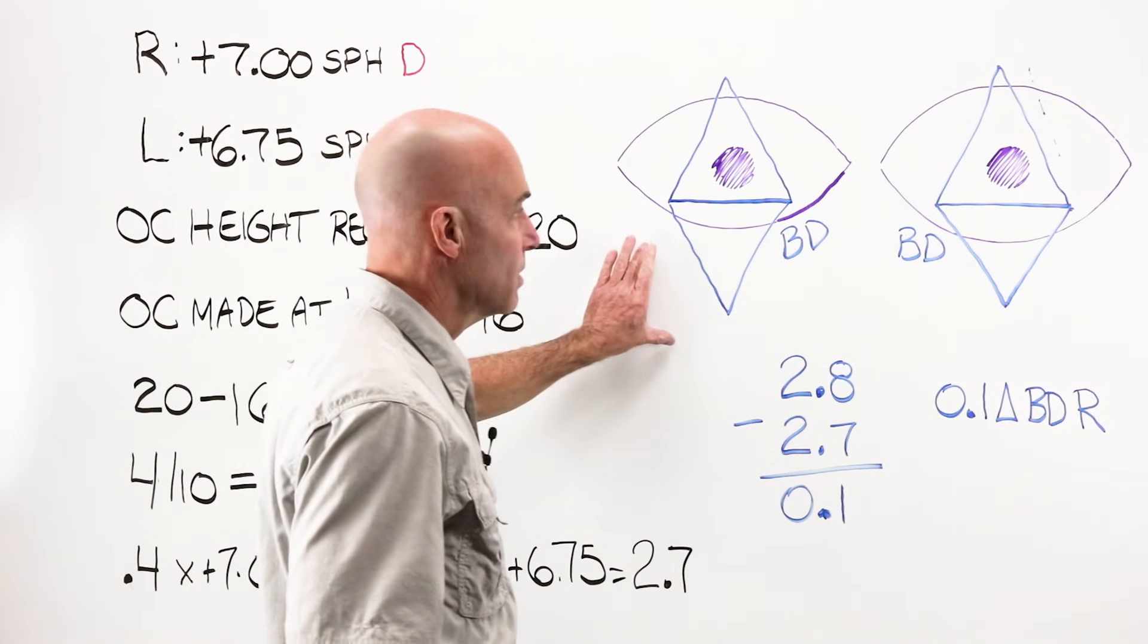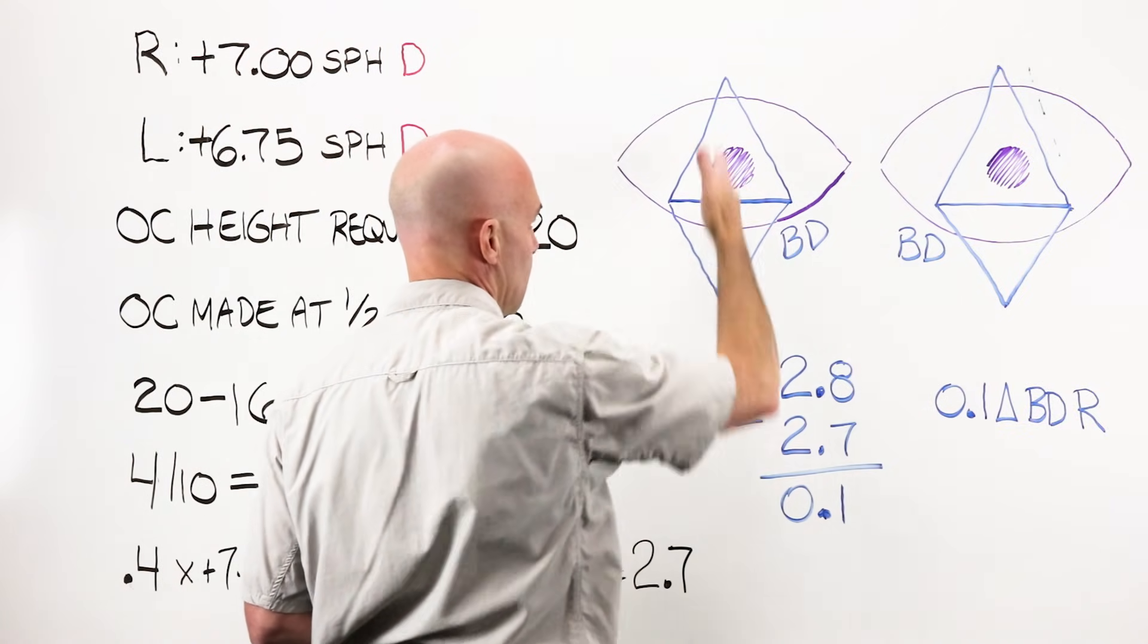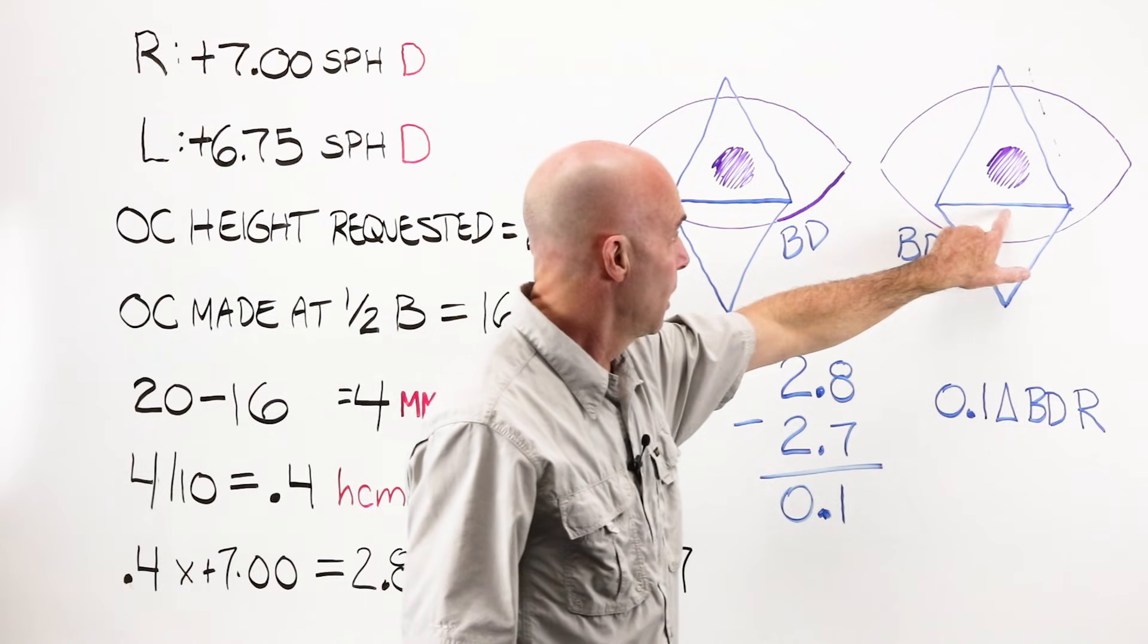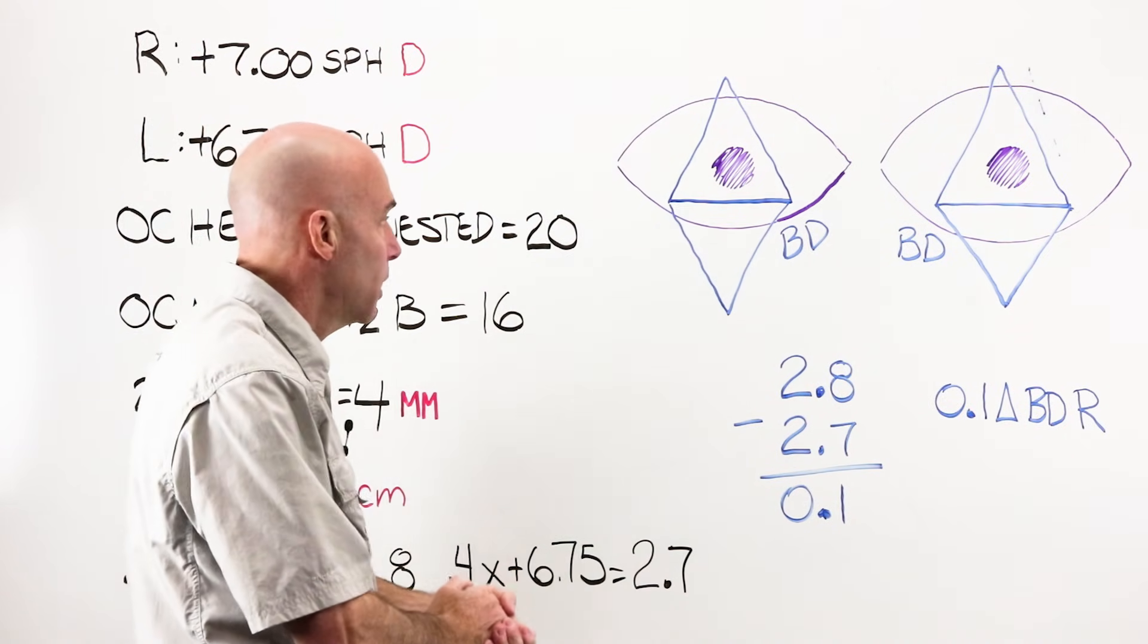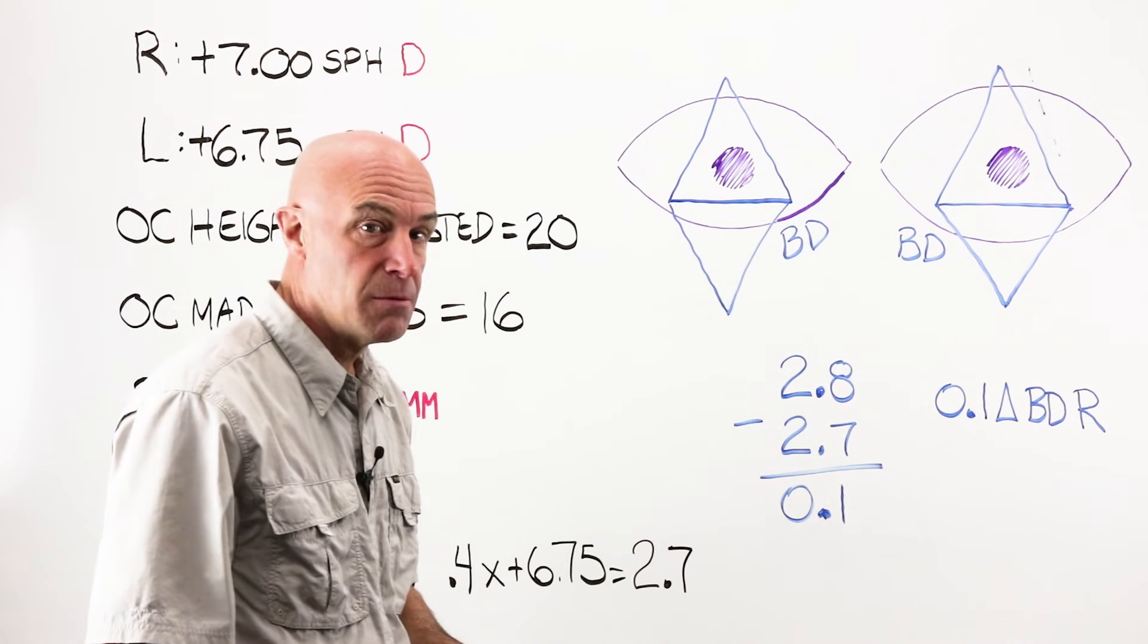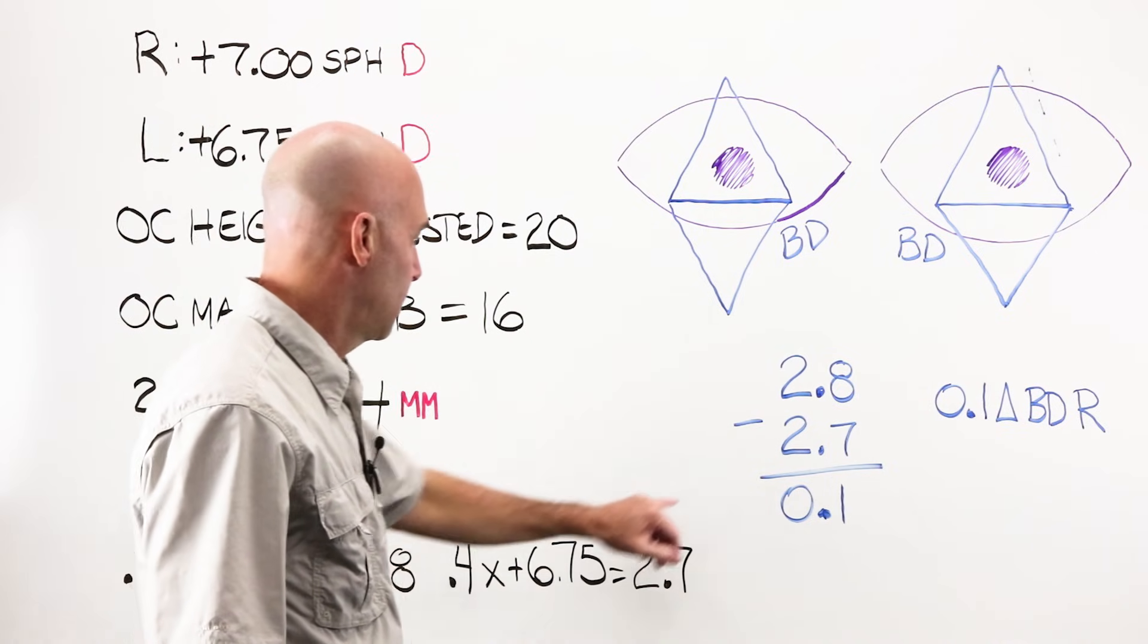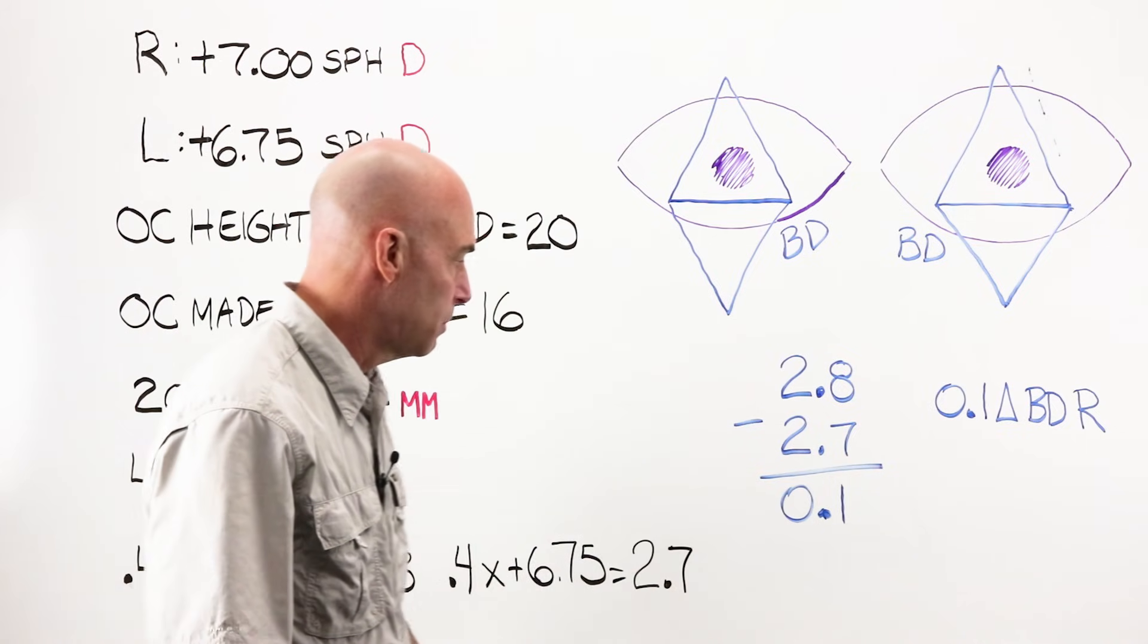When I draw this out, I draw my plus lenses in the 90th meridian. And it looks like I'm getting base down prism in my right, base down prism in my left. I don't think there's a whole lot of other way to look at that. My chart tells me when I have base down, base down, that those cancel each other out. They don't make things worse. So I can take my 2.8 and take away my 2.7, which leaves me with basically nothing, 0.1.